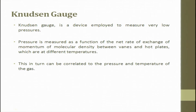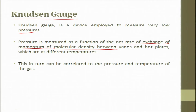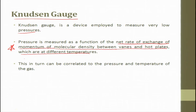Another gauge is called the Knudsen gauge; it is a device employed to measure very low pressure. The pressure measured is a function of the net rate of exchange of momentum of molecular density between the vane and the hot plate, which are at different temperatures. This is the principle with which the Knudsen gauge works — the pressure is measured as a function of net rate of exchange of momentum between the vanes and the hot plate kept at different temperatures, which in turn correlates the pressure and temperature of the gas.